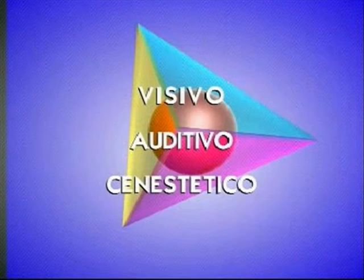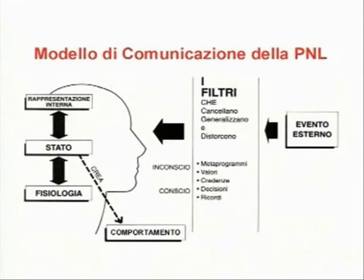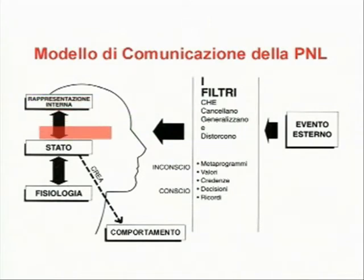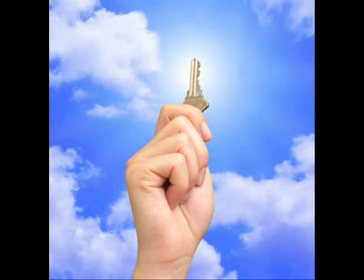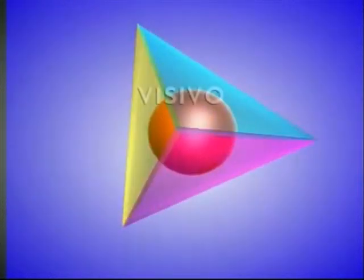Individuare e gestire i sistemi rappresentazionali permette di individuare le strategie di comportamento che la persona utilizza nelle diverse situazioni, cioè il processo di elaborazione del suo comportamento attraverso una sequenza ordinata di rappresentazioni, per riprodurre modelli di comportamento o per migliorare l'interazione con la persona. I sistemi rappresentazionali sono tre: Visivo,